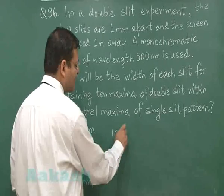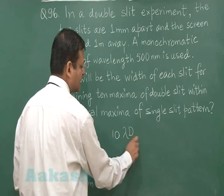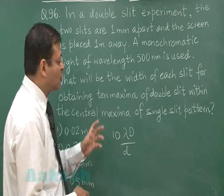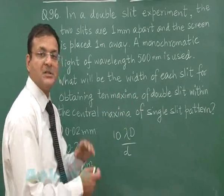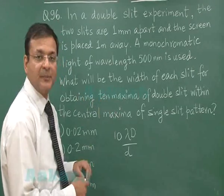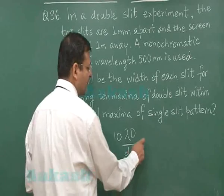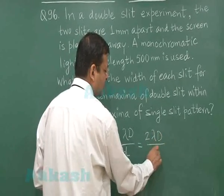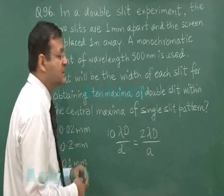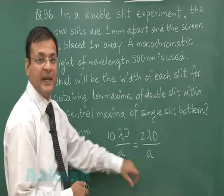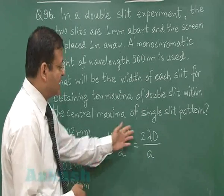On Young's double slit experiment, the fringe width is lambda D upon small d. They want 10 fringes to be accommodated in the central maxima of the diffraction pattern. What is the width of the central maxima? That is 2 lambda D upon the size of the aperture, and the size of the aperture is the width of the slit. So in this particular question, the value of A will be simply 2D by 10.